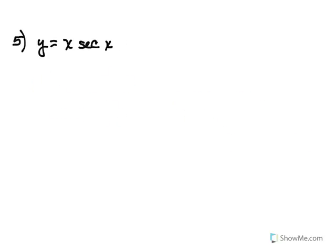This next one's going to require product rule as well. So we'll keep the x, multiply by derivative of secant, which is secant tangent, plus, now we keep the secant and derivative of x of course is just 1. So we can just leave it like that.